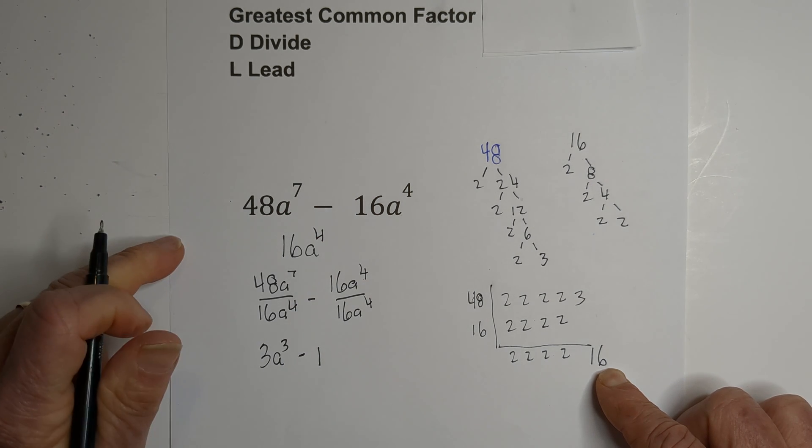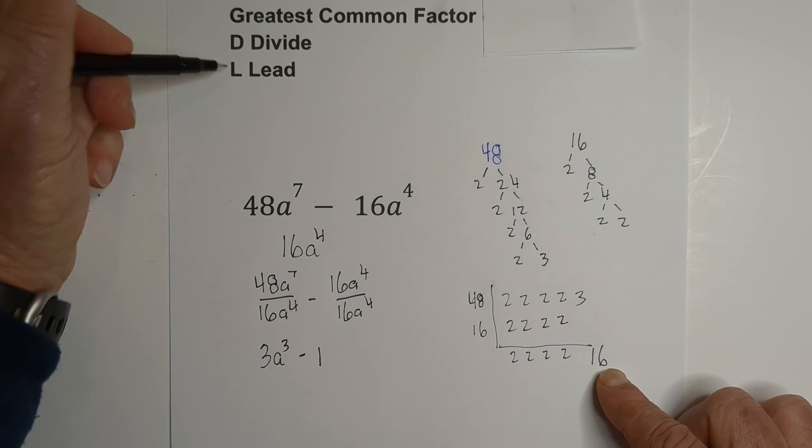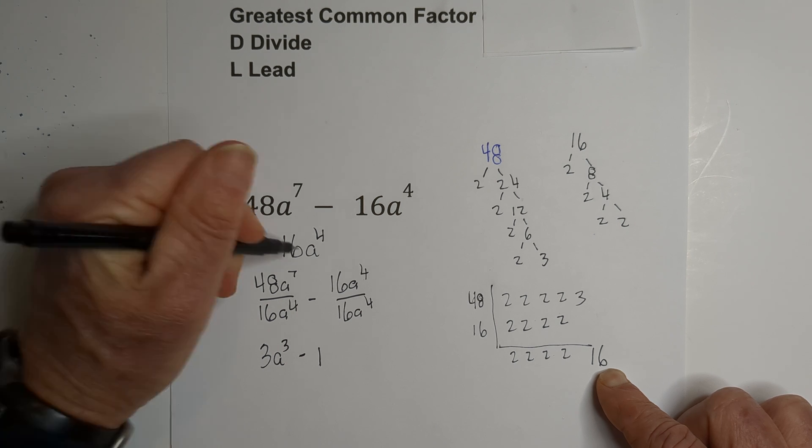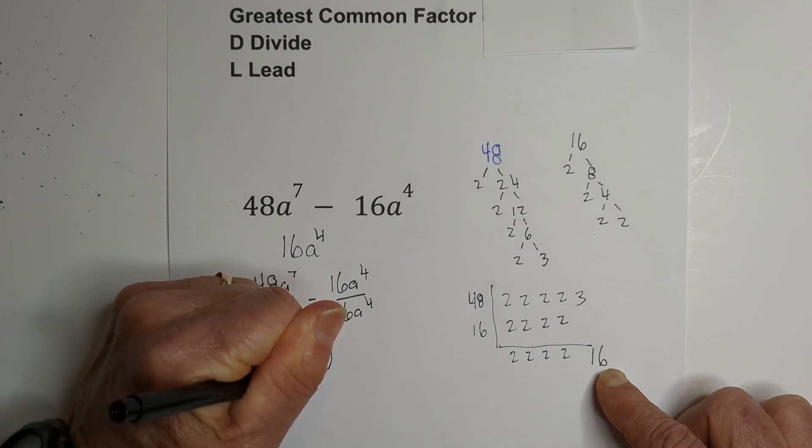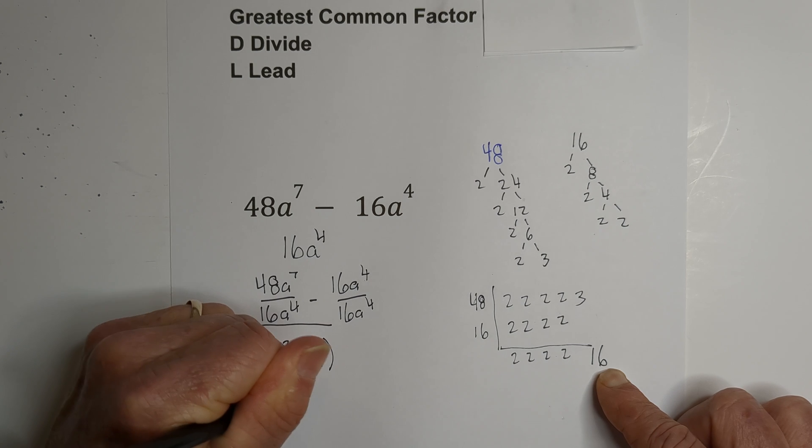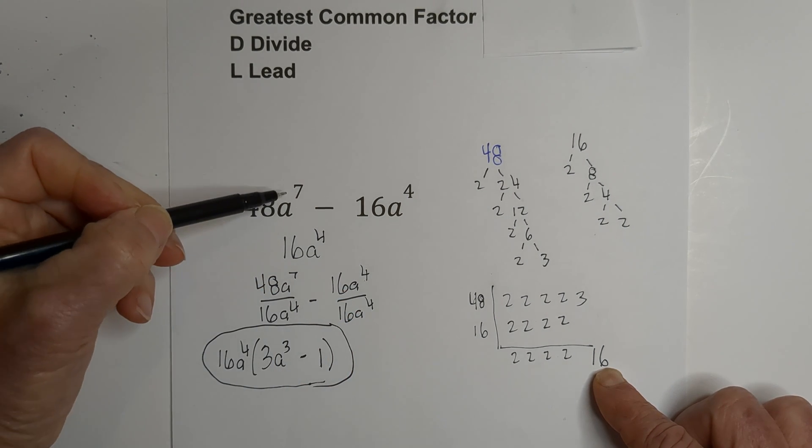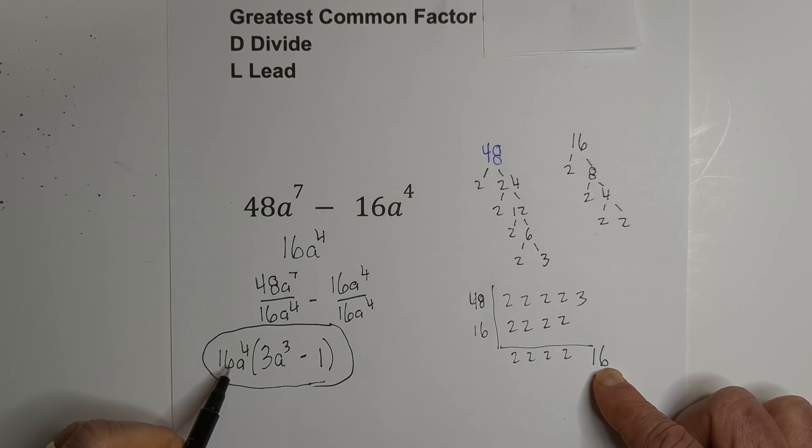Now we need to go back. We've found the greatest common factor and divided. Now we need to lead with the greatest common factor, which is 16a^4. So there it is factored. The factored form of 48a^7 minus 16a^4 is 16a^4(3a^3 - 1).